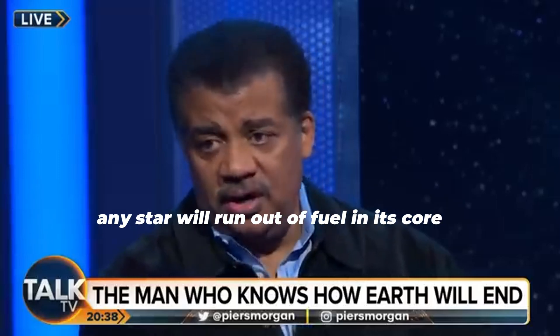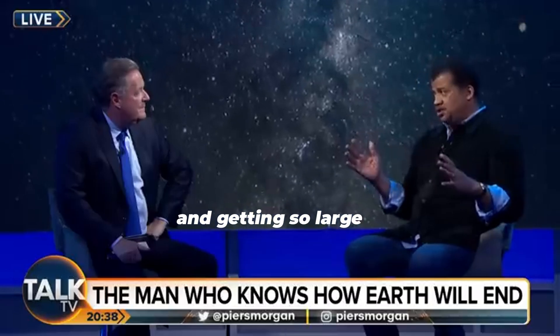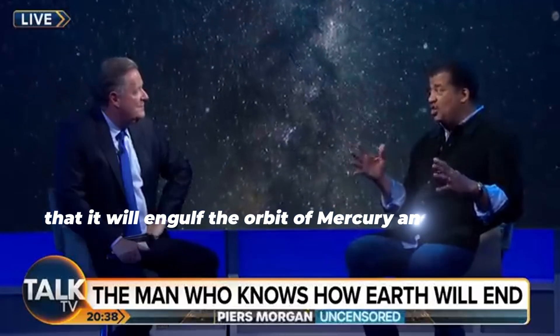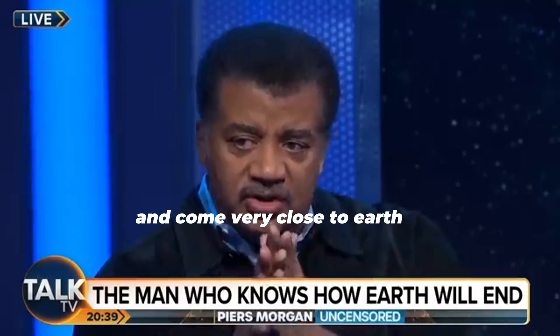Any star will run out of fuel in its core and it starts changing, bloating and getting so large that it will engulf the orbit of Mercury and Venus and come very close to Earth.